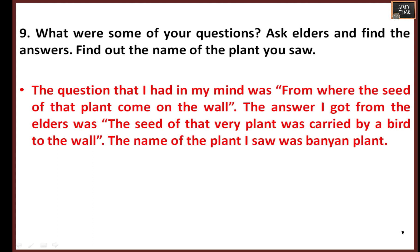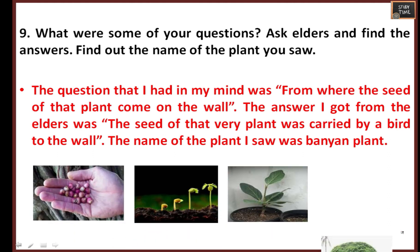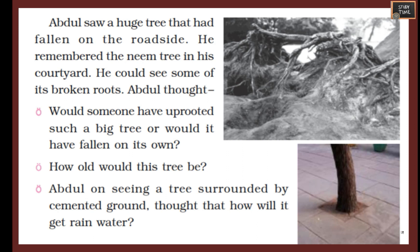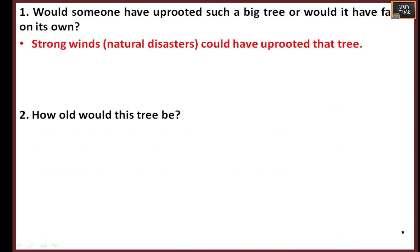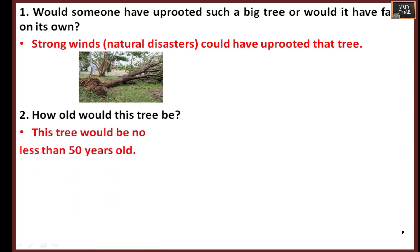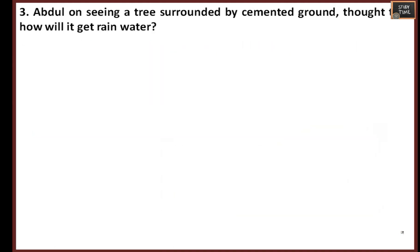The name of the plant seen was a banyan plant. Abdul saw a huge tree that had fallen on the roadside and remembered the neem tree in his courtyard — he could see some of its broken roots. He wondered whether somebody had uprooted such a big tree or whether it had fallen on its own, perhaps due to natural disasters. This tree would be no less than 50 years old.